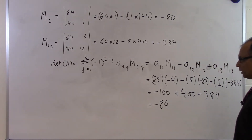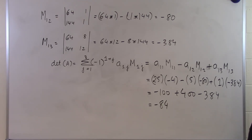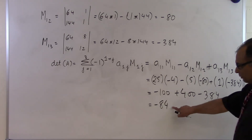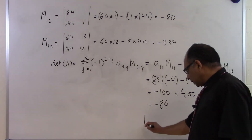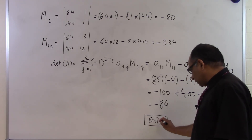That's how we find the determinant of a matrix by using minors. You could use any row or any column to find the determinant. Here we used the first row, but you can repeat the process using the second row, third row, or any column, and you'll still get minus 84.